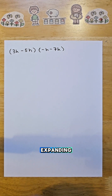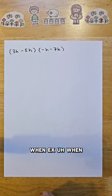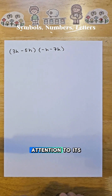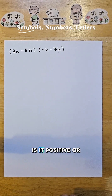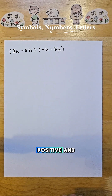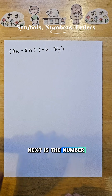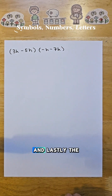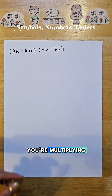Before we start expanding, we have to remember some key points. When multiplying two numbers with letters, we have to pay attention to the symbol — is it positive or negative? Positive and positive is positive, positive and negative is negative, and negative and negative is positive. Next, pay attention to the number when multiplying. And lastly, pay attention to what letters you're multiplying.